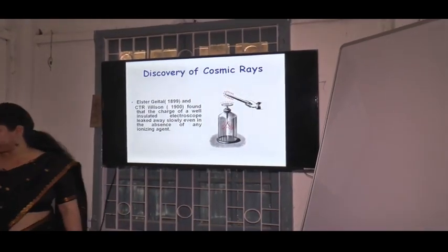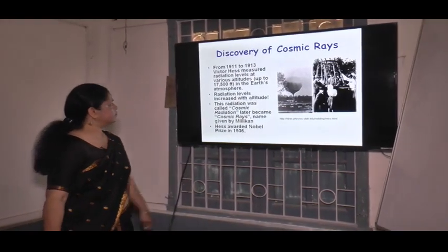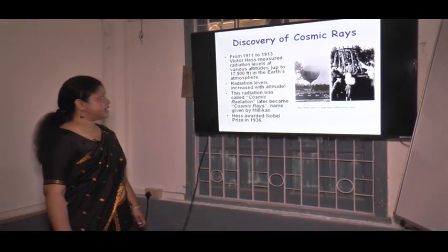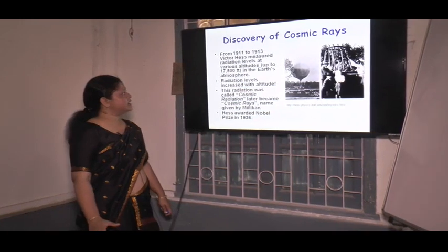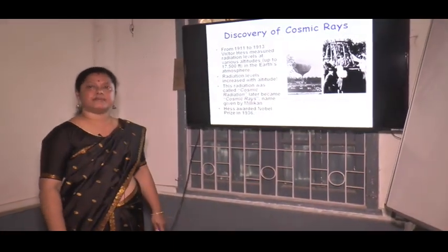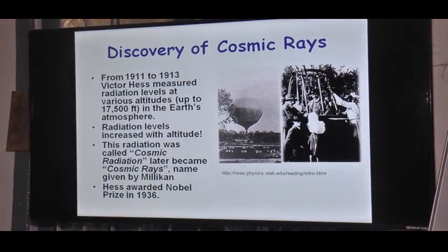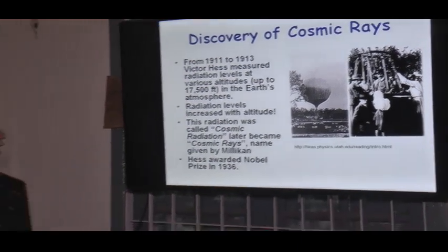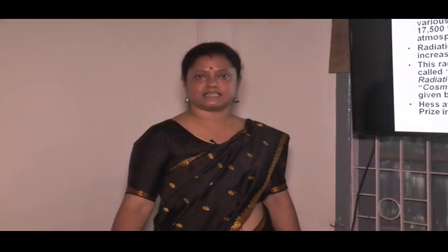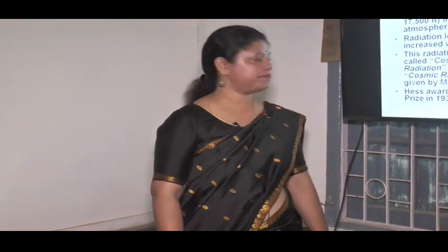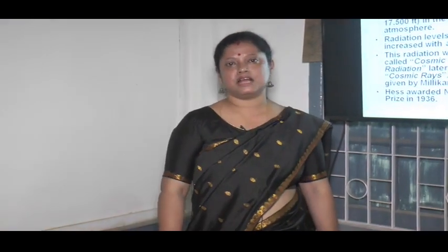After this experiment, from 1911 to 1913, Victor Hess measured radiation levels at various altitudes in his series of balloon experiments in the Earth's atmosphere. He found that radiation levels increased with altitude. This radiation was called cosmic radiation, and later it was known as cosmic rays. The name 'cosmic ray' was given by Millikan, who was awarded the Nobel Prize in 1936 for this achievement.